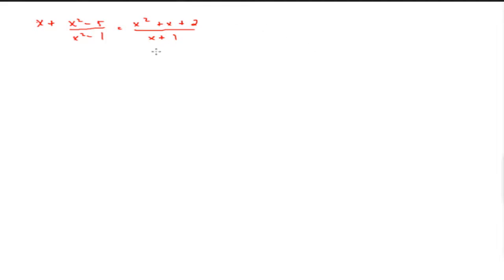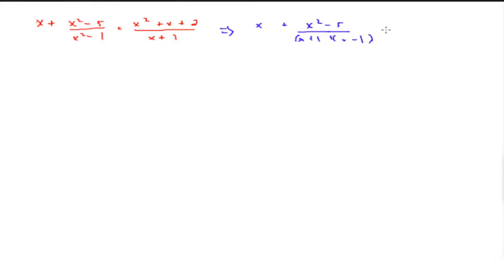When we do a question like this, it's important to determine the common denominator. So the first step is I'm going to expand whatever I can in the denominator. So we got x plus x squared, x squared minus 5, over — and I'm going to expand that out — and that's going to be two brackets: x plus 1 and x minus 1, which is equal to x squared plus x plus 2 over x plus 1.